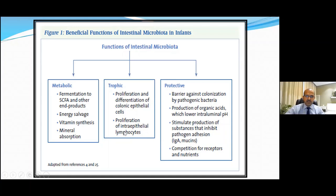This balances the T-helper-1 to T-helper-2 ratio, which governs fighting infection versus having an inflammatory response. If the milieu is disturbed and inflammation increases, we have cytokine production. These cytokines may cross the blood-brain barrier, impacting not just local gut health but also brain development. That's why the risk of necrotizing enterocolitis with impaired brain development is fairly high.